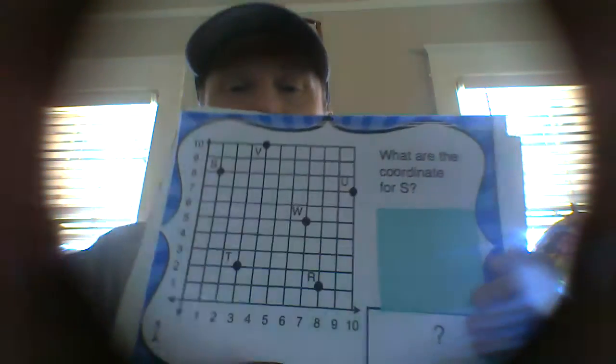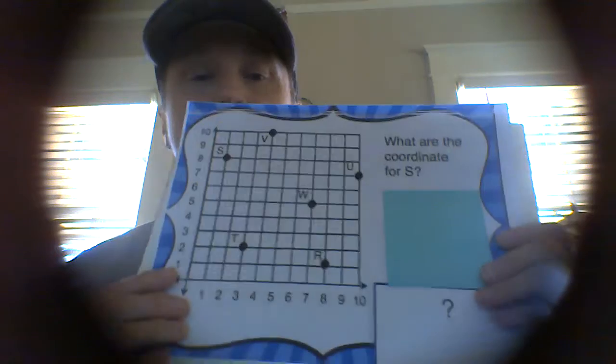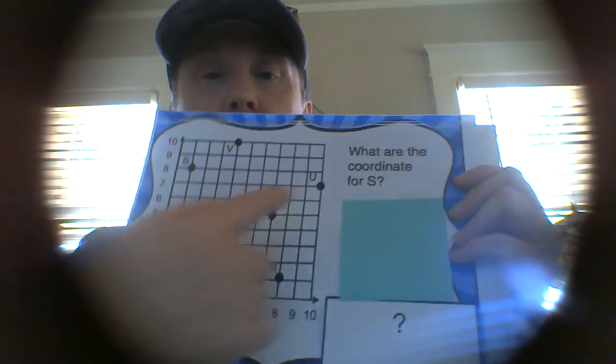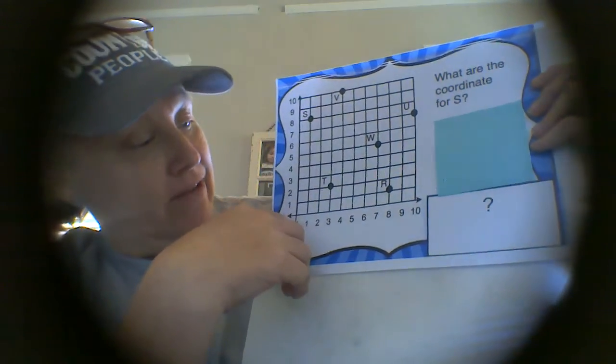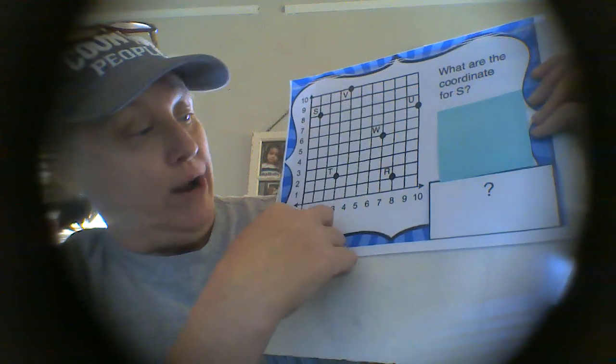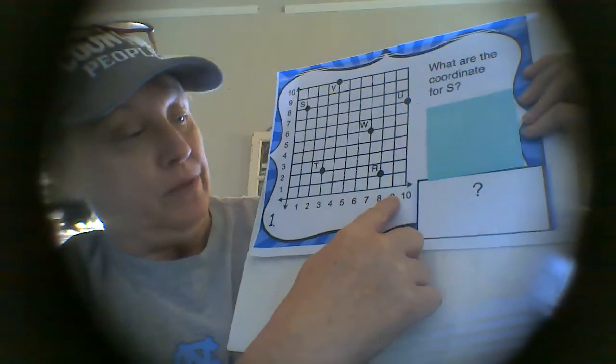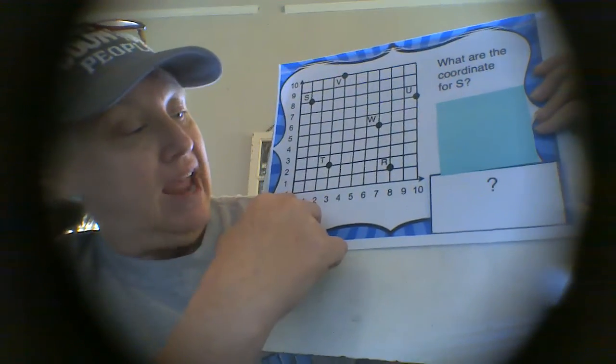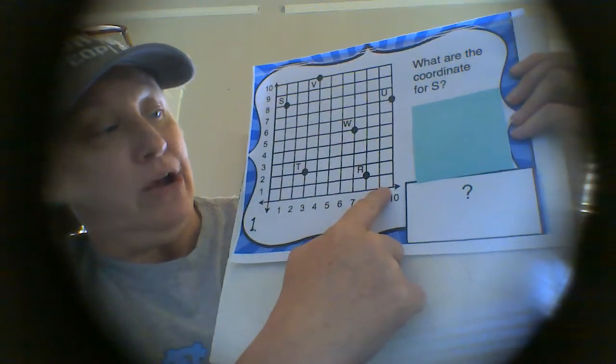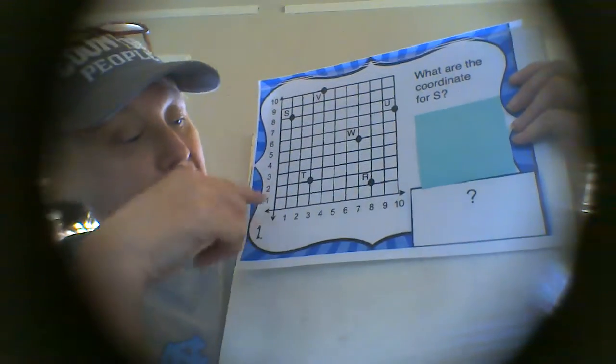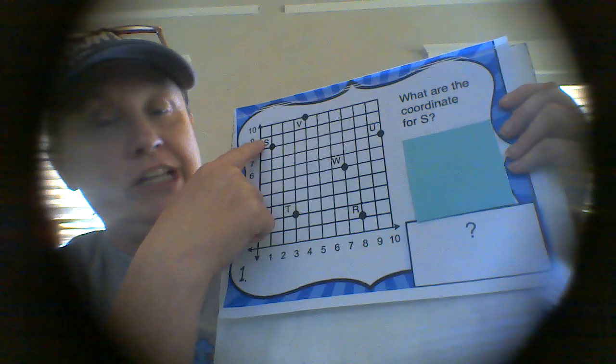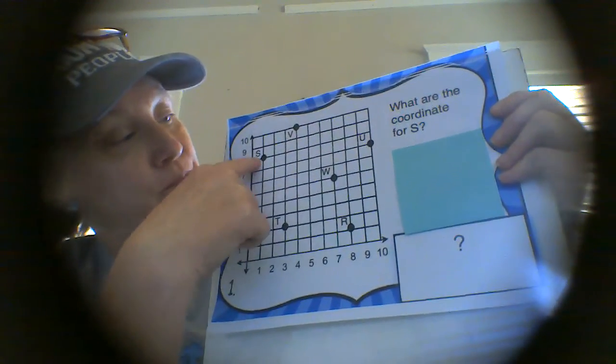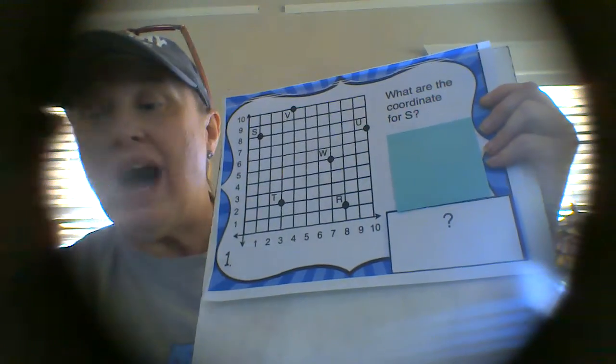We'll look at this as a review. If you see our coordinate grid, we have numbers going horizontally, which is going across, and this axis is known as our x-axis. Then we also have numbers going up vertically, and this line here is known as our y-axis.